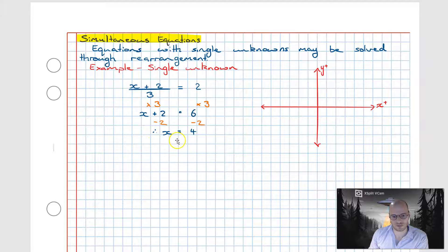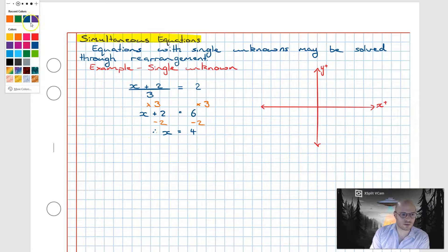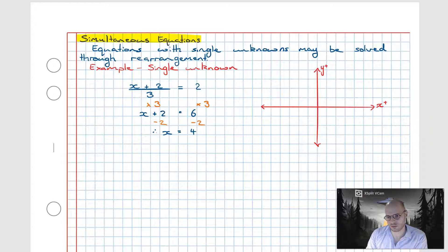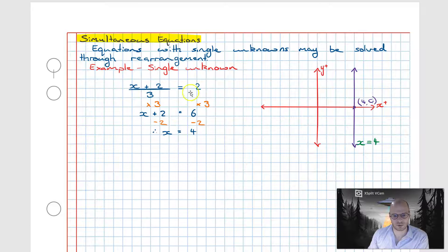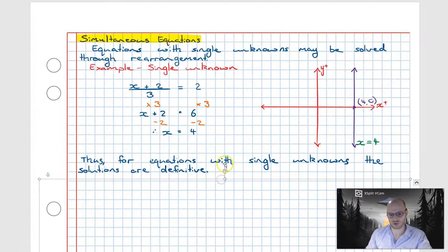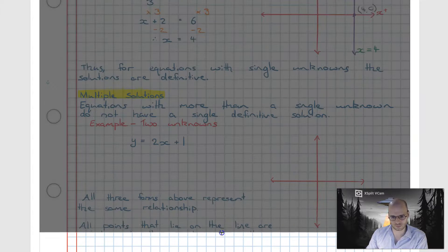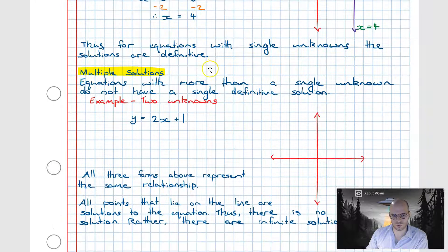We can represent x = 4 visually using our Cartesian plane. We locate x = 4, which is the point (4, 0), and draw a vertical line through it. This is the graphical representation of the algebraic statement, meaning x = 4 for all values of y. Equations with single unknowns typically have a definitive result.